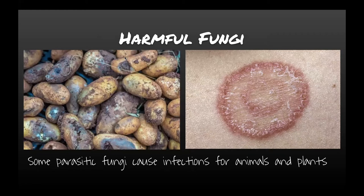There are also harmful fungi. Some parasitic fungi cause infections for animals and plants—things like toe fungus, ringworm, yeast infections, and other fungal infections. They can also infect plants. A picture of potato plants infected with a certain fungus illustrates what caused the potato famine in Ireland historically—a big deal especially in Ireland. Fungi can definitely harm crops across entire fields.